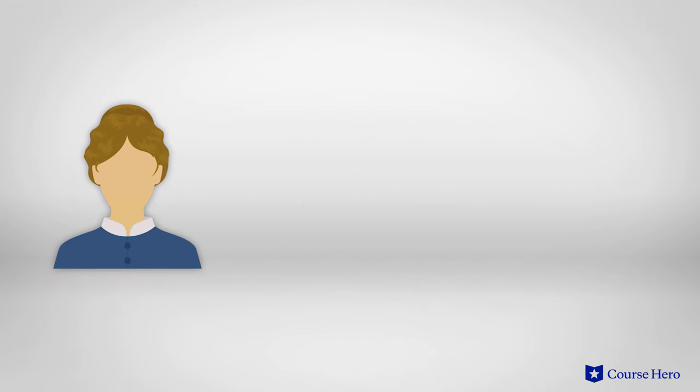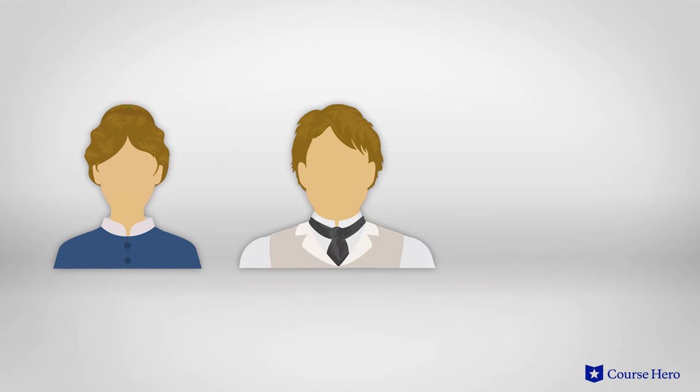Edna's sexual awakening is an important part of her self-discovery. She has the stirrings of physical attraction to Robert before he leaves for Mexico. When she meets Alcée Arobin, she can experience sexual passion in ways she hasn't in her marriage. This awakening leads her to initiate a more physical relationship with Robert, though he's ultimately unwilling.